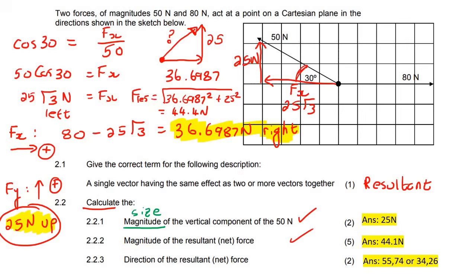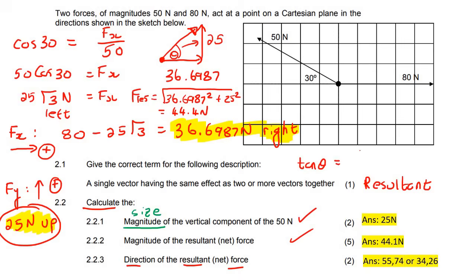Then it asks for the direction of the resultant force. We come back to our little triangle and work out this angle. Teachers typically use tan here because we have the opposite and adjacent sides. So tan θ = 25 / 36.6987, and then θ = tan⁻¹(25 / 36.6987). Using shift-tan on your calculator, you get 34.26 degrees.